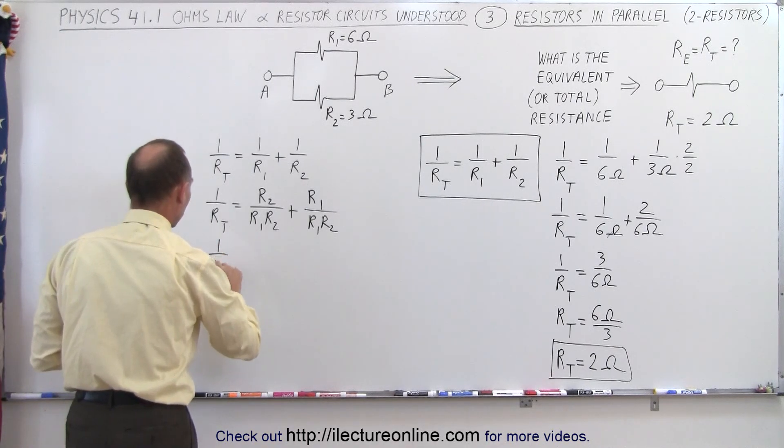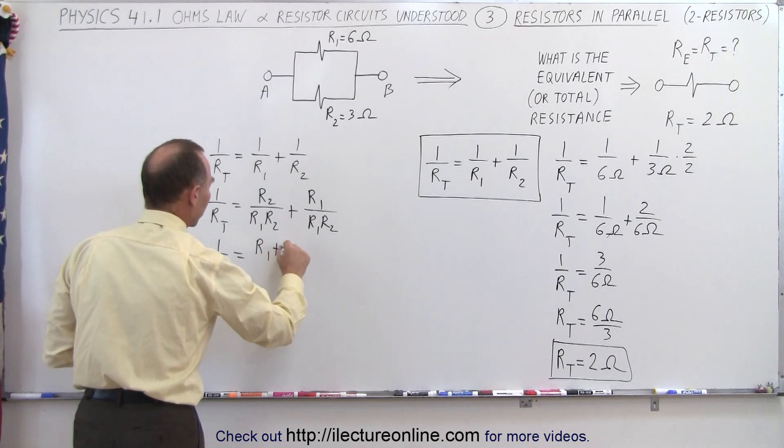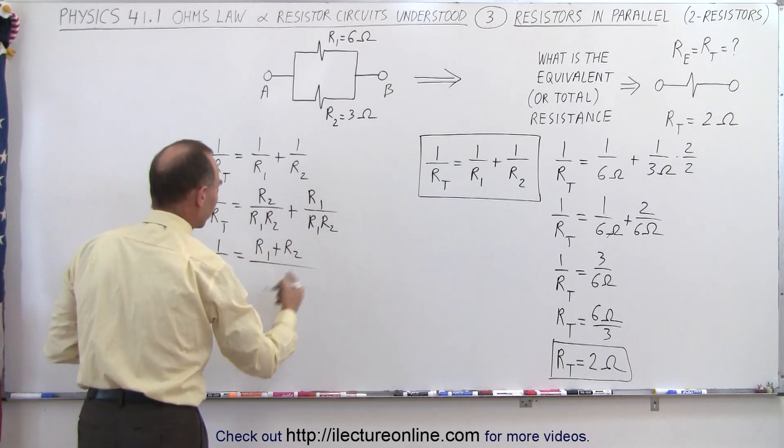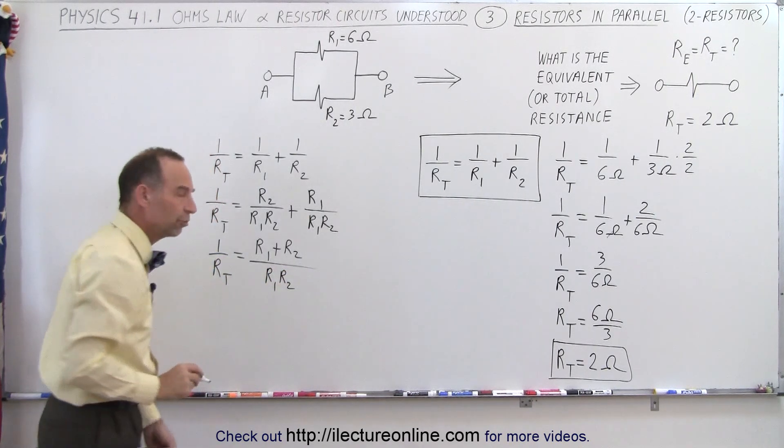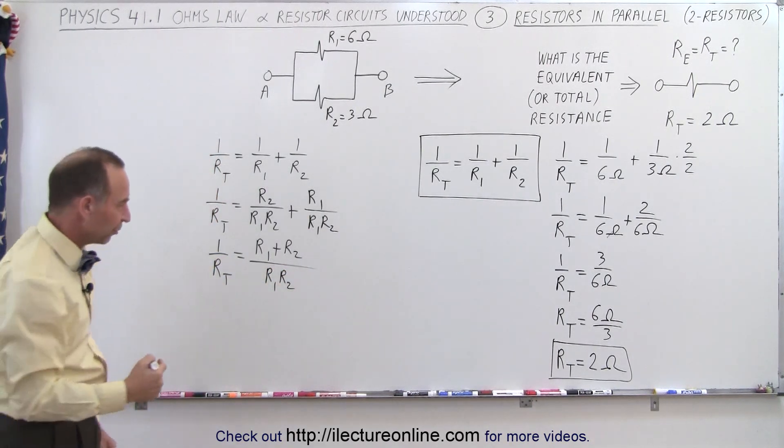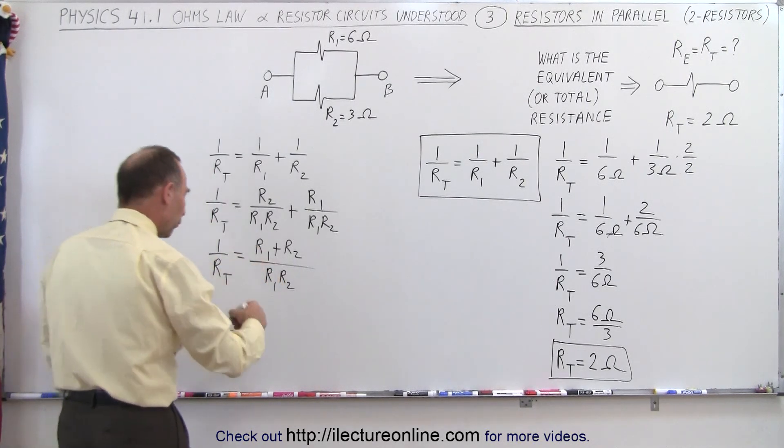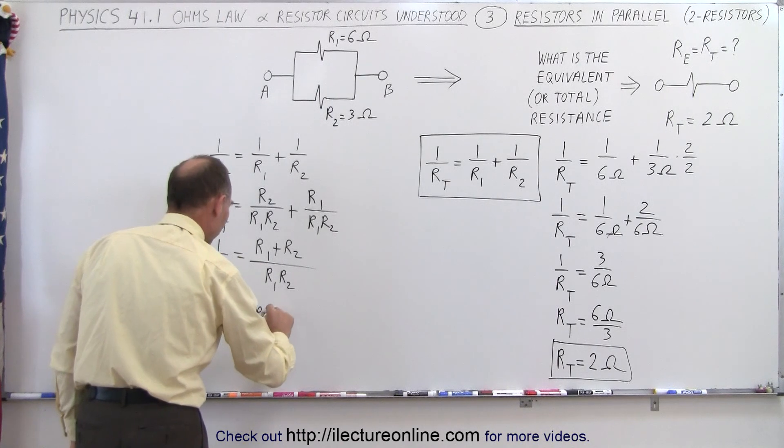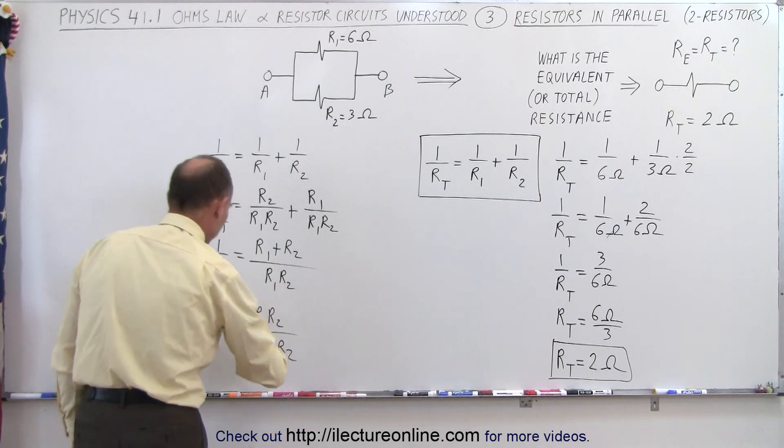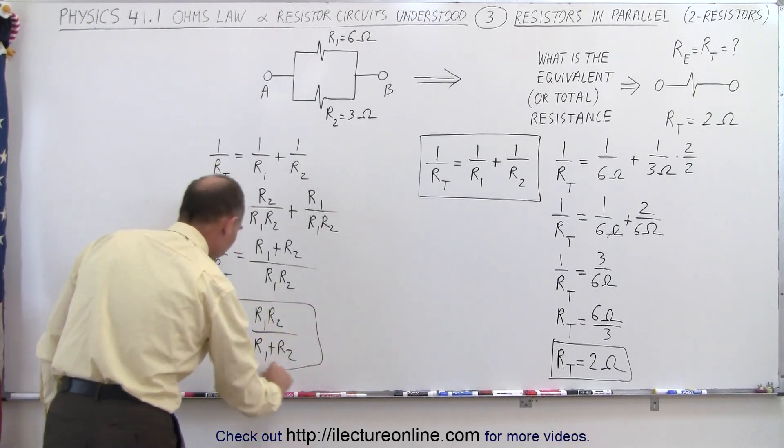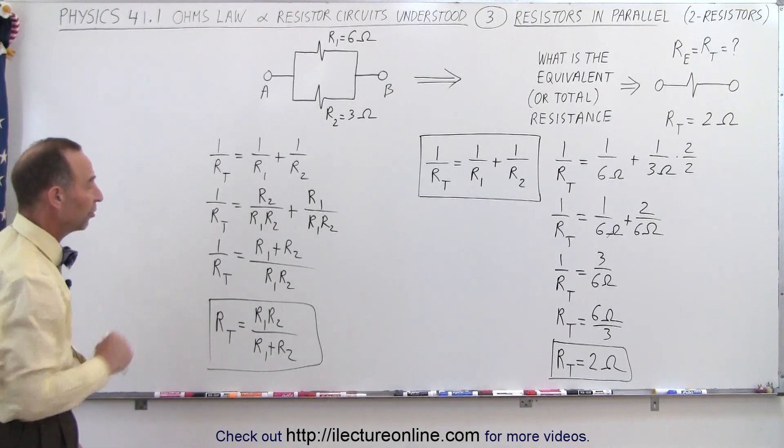So now we have two fractions that have the same denominator. So this can be written as 1 over R total is equal to R1 plus R2 in the numerator, because I reversed the order here, divided by the common denominator of R1 times R2. And then if we take the inverse of both sides, we can then say that the total resistance, R total, is equal to the product over the sum, as we call it. It will be R1 times R2 divided by R1 plus R2. So this is the equivalent equation for finding the total equivalent resistance of two resistors in parallel.